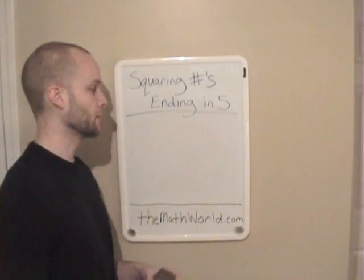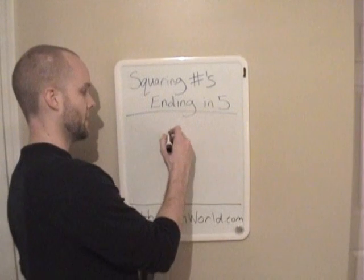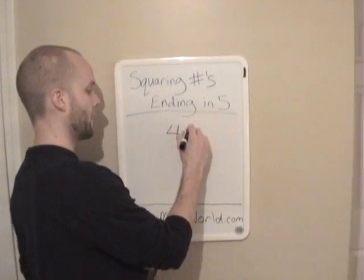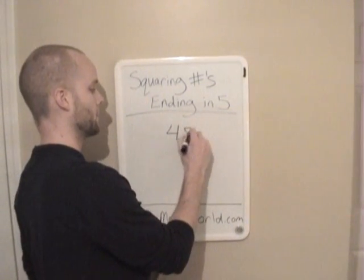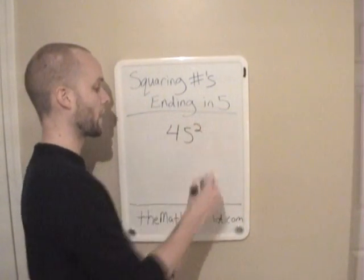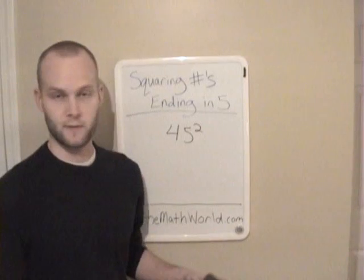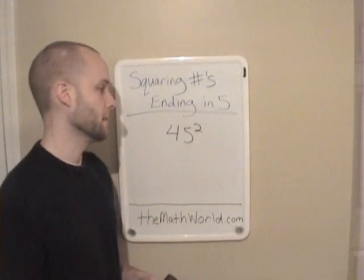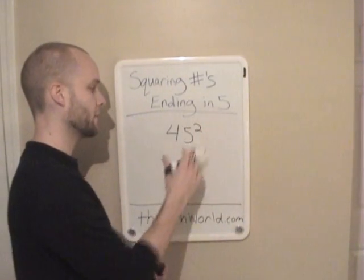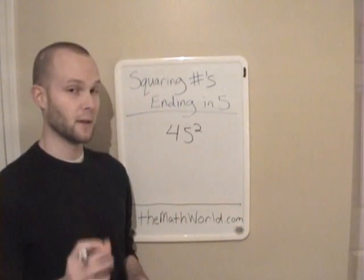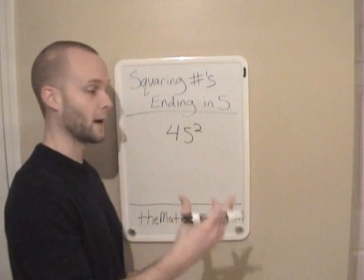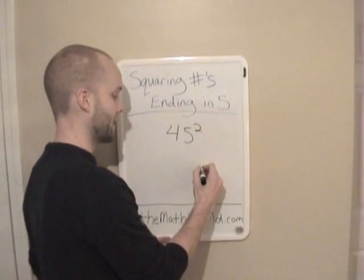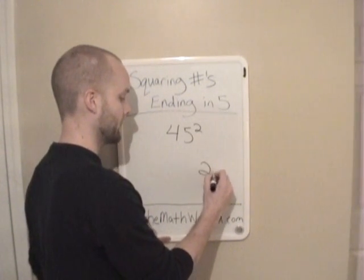And it's super simple. Let's take our first example: 45 squared, or 45 times 45, however you may see it. All you have to do any time you have a number ending in 5 squared is you first are going to write down 25.